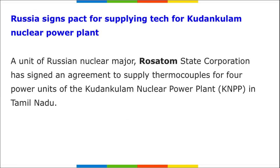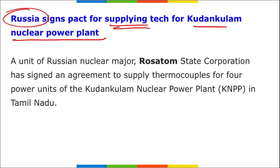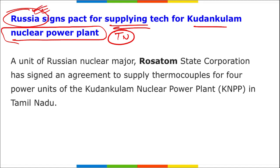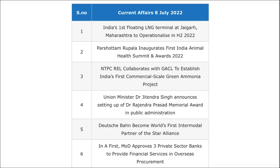Russia will supply thermocouples for the four power units of the Kudankulam Nuclear Power Plant, which is located in Tamil Nadu. That concludes today's news — let's now revise all the news in one-liner format.